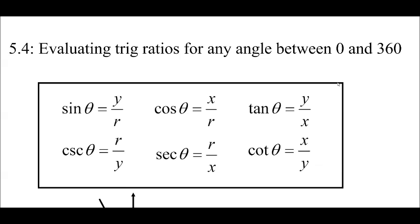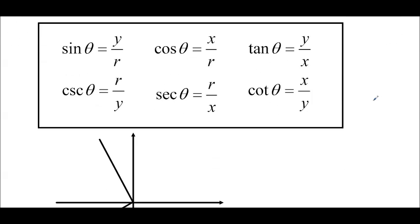Hello and welcome to Ms. Ma's Grade 11 Functions class. This is 5.4, Evaluating Trig Ratios for Any Angle Between 0 Degrees and 360 Degrees. In the past we learned definitions for sine, cosine, tan, cosec, sec, and cotan. They're really important because now we can define the trigonometric ratios using coordinates on the coordinate grid.